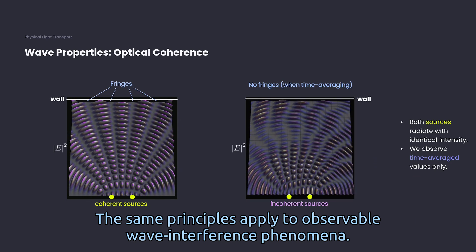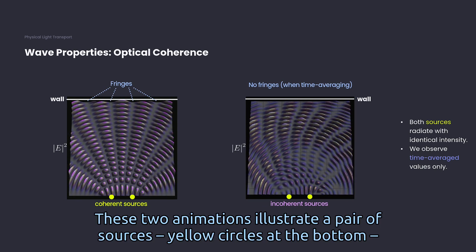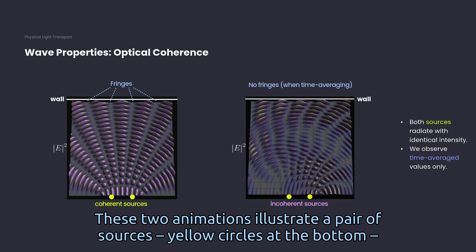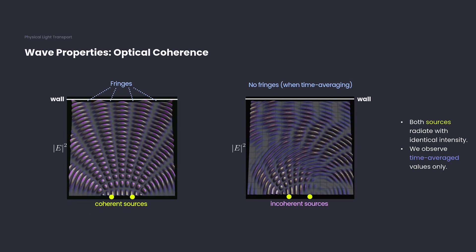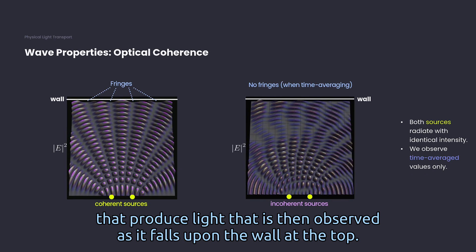The same principles apply to observable wave interference phenomena. These two animations illustrate a pair of sources, yellow circles at the bottom, that produce light that is then observed as it falls upon the wall at the top.